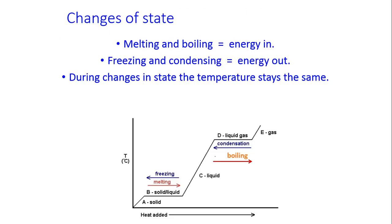Here's a graph. This is the graph that you should have drawn from our lab last week. And during changes in state, the temperature stays the same. So when we were adding energy by heating the ice, it changed from a solid to a liquid at 0 degrees Celsius. And it stayed at that temperature until all of the ice had turned to a liquid. And at that time, the temperature began to rise until it reached 100 degrees Celsius when the liquid turned into a gas.